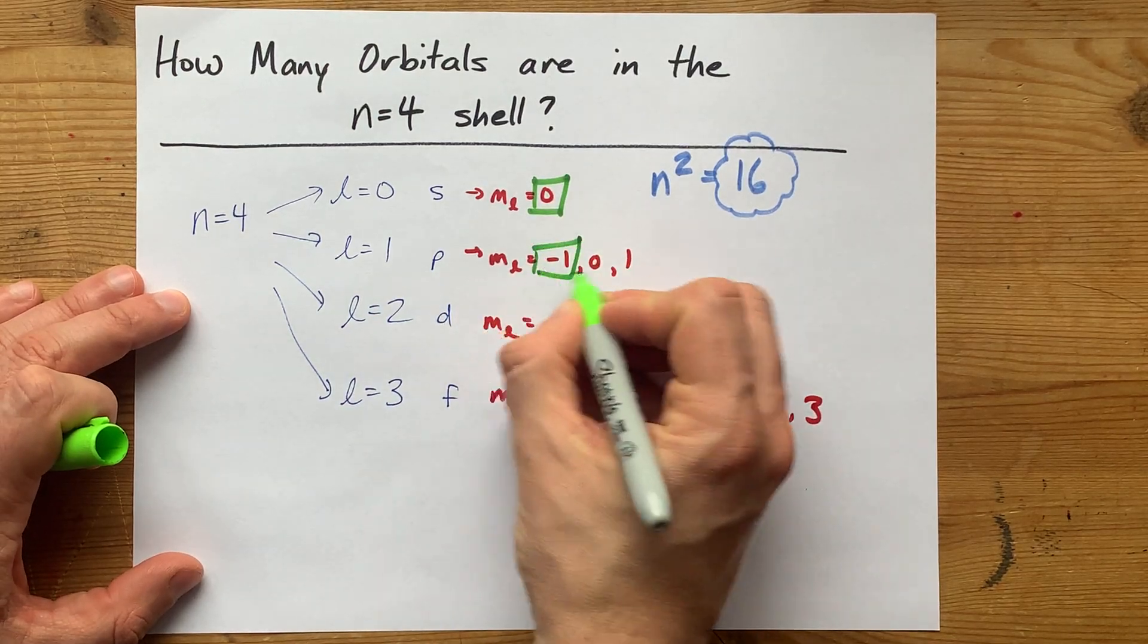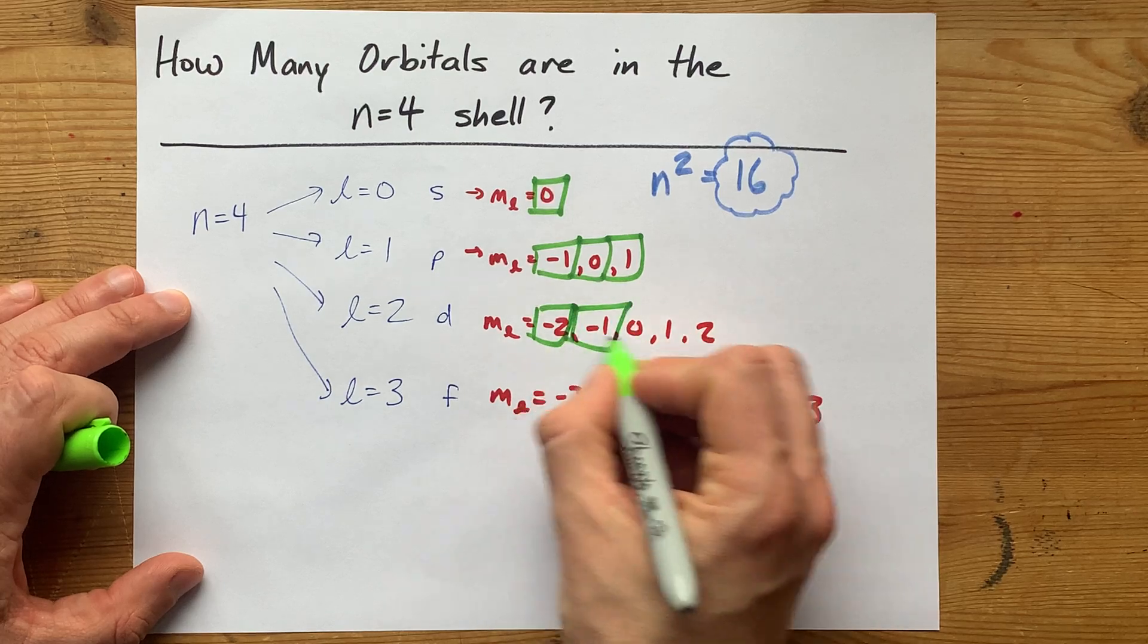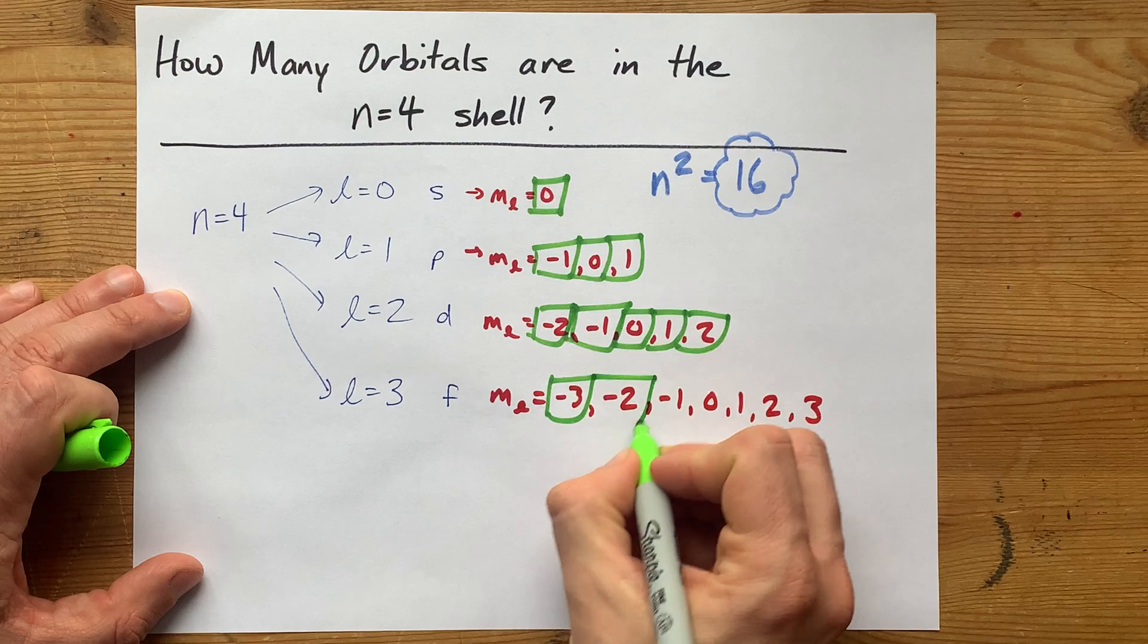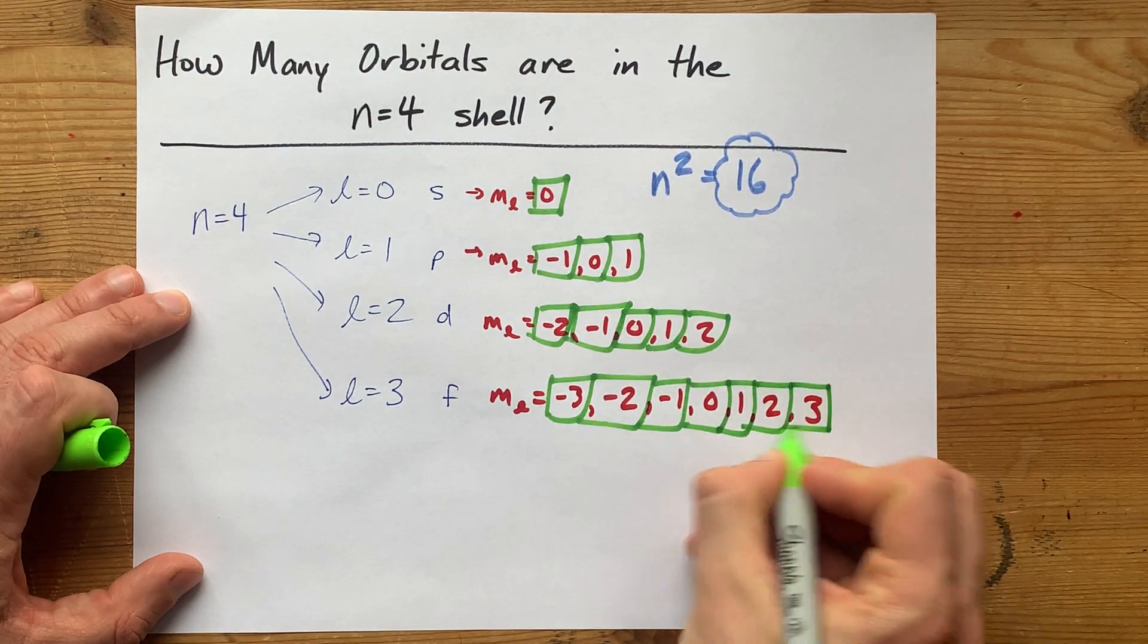So there's 1, and there's 2, 3, 4, 5, 6, 7, 8, 9, 10, 11, 12, 13, 14, 15, 16.